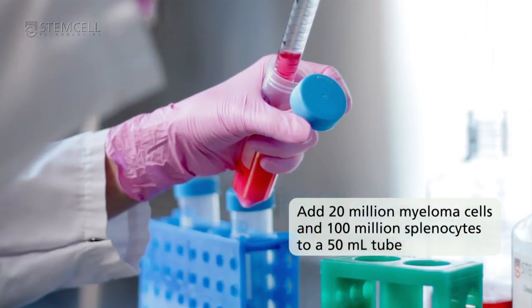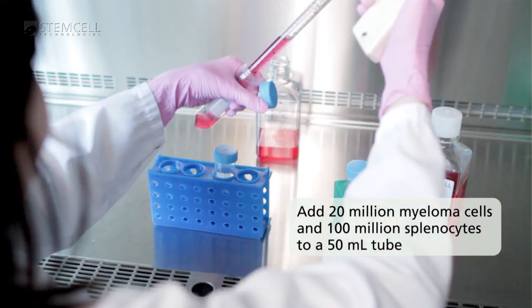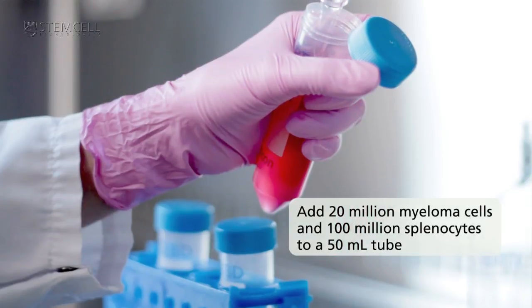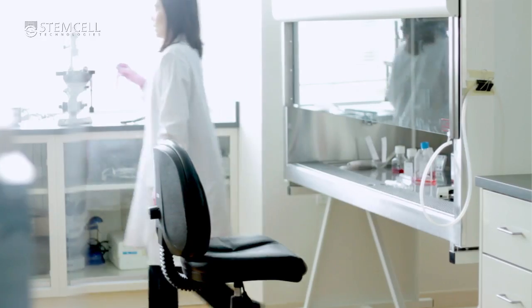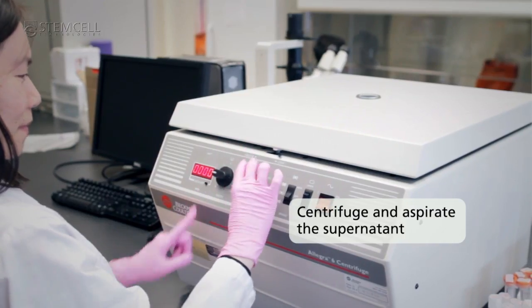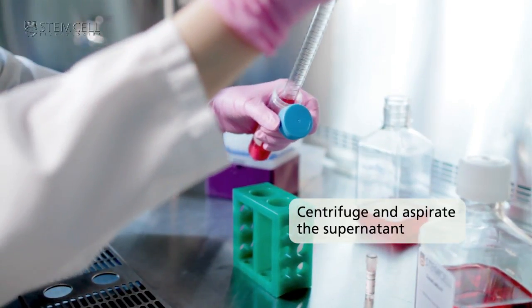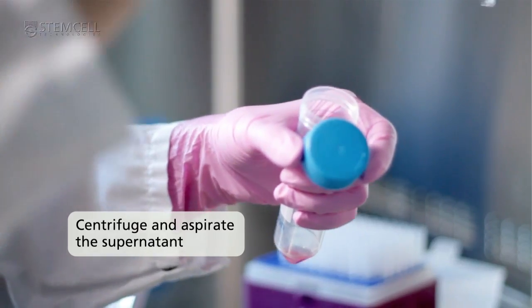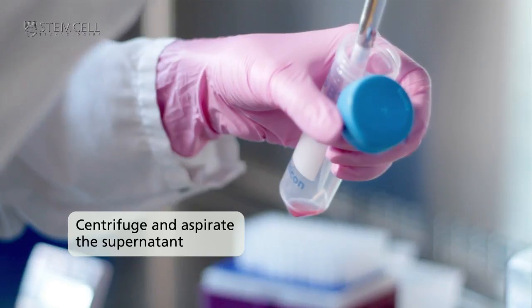Add 20 million parental myeloma cells and 100 million viable splenocytes to a 50 mil tube. Centrifuge and aspirate the supernatant. It is important to completely remove the supernatant to avoid diluting the PEG that will be added.